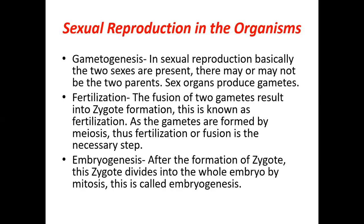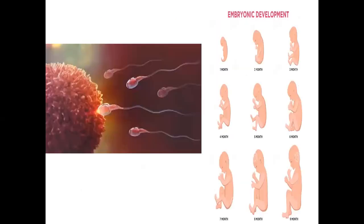The third step is embryogenesis. After the formation of the zygote, it divides by mitosis to form the whole embryo. Embryogenesis is the process of formation of the embryo from a single zygote through mitosis. In the image, sperms are shown trying to fertilize the ovule, and the next diagram shows an embryo growing from one month to nine months.